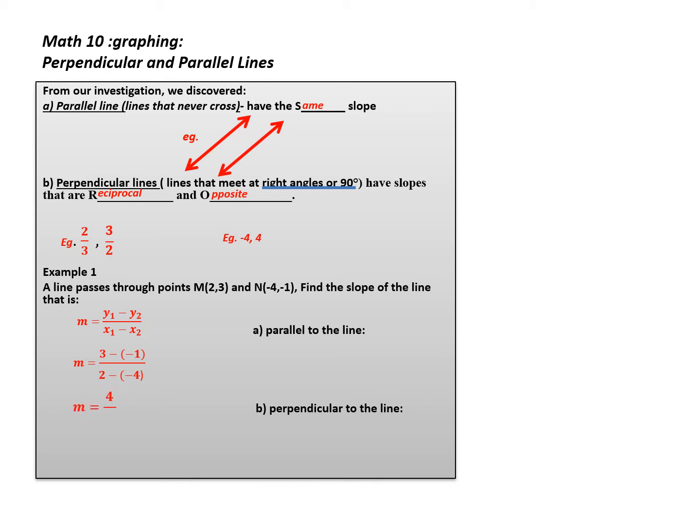2 minus negative 4 is 6. At this point I ask myself, can I reduce the fraction? And the answer is yes — I can divide both top and bottom by 2, giving me 2 over 3.